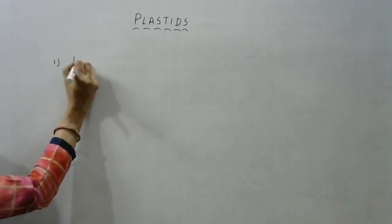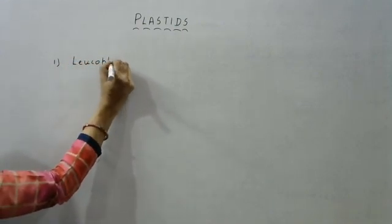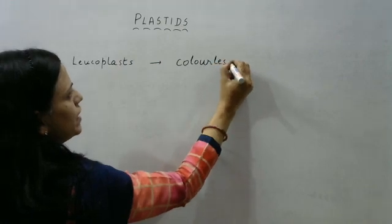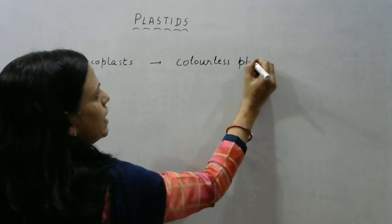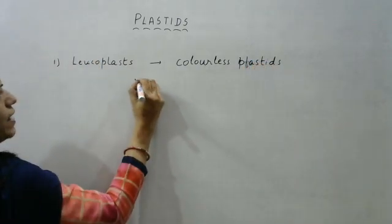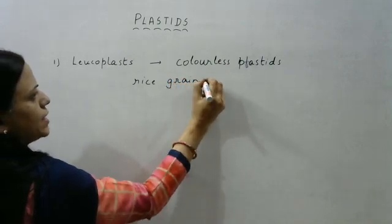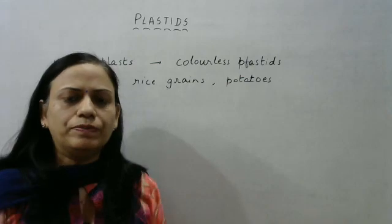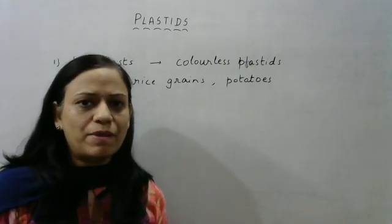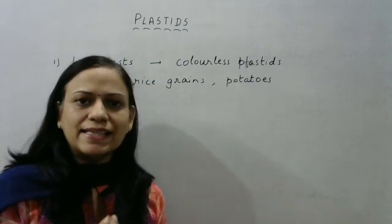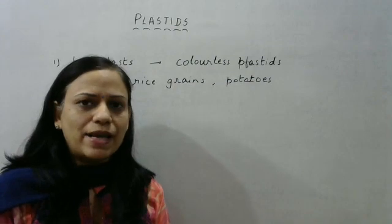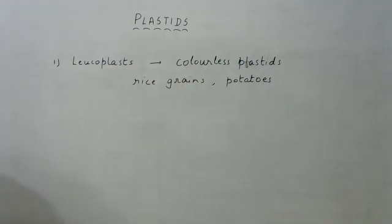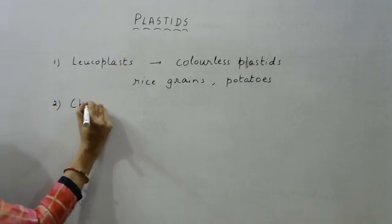The first type is leucoplast. These are the colorless plastids — they don't have any color in them. They are basically present in rice grains and potato. As you can see, potatoes and rice grains don't have any color; if you cut a potato it's somewhat white or transparent, and a rice grain also doesn't have any particular color. So the plastids present in these things are called leucoplasts, or the colorless plastids.